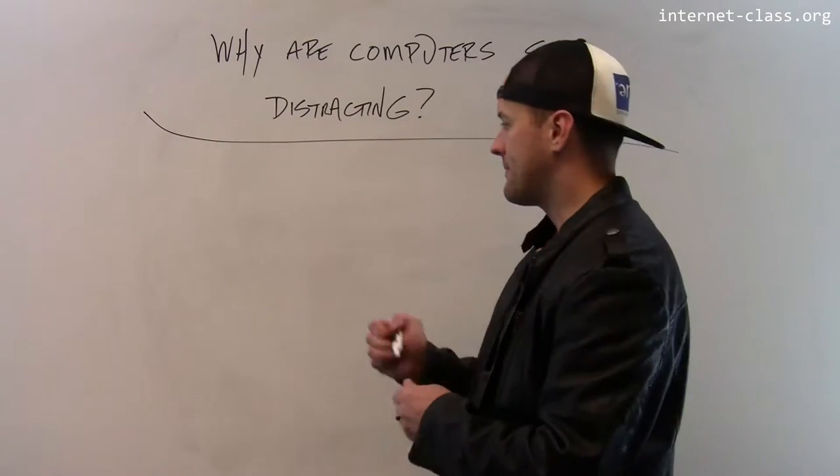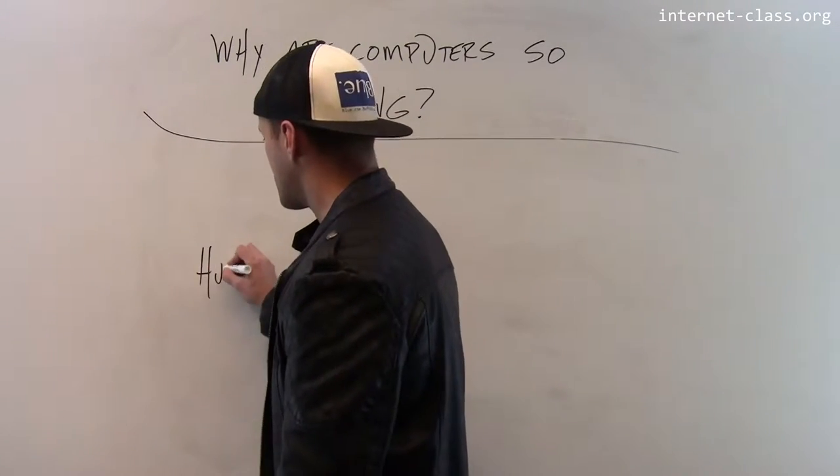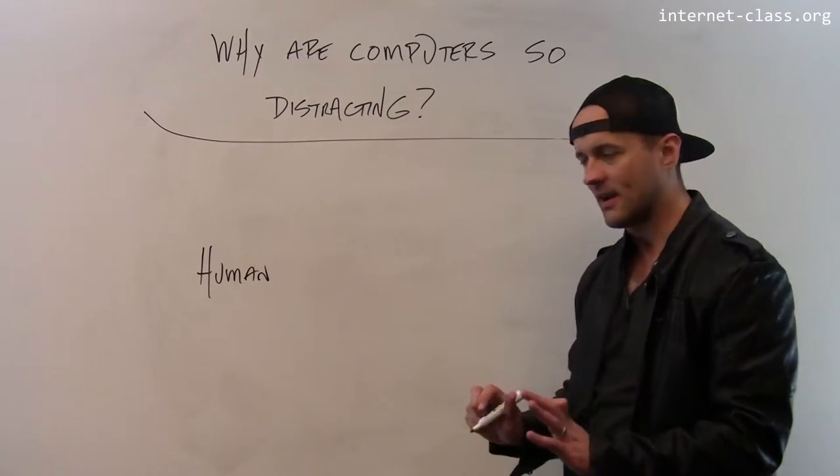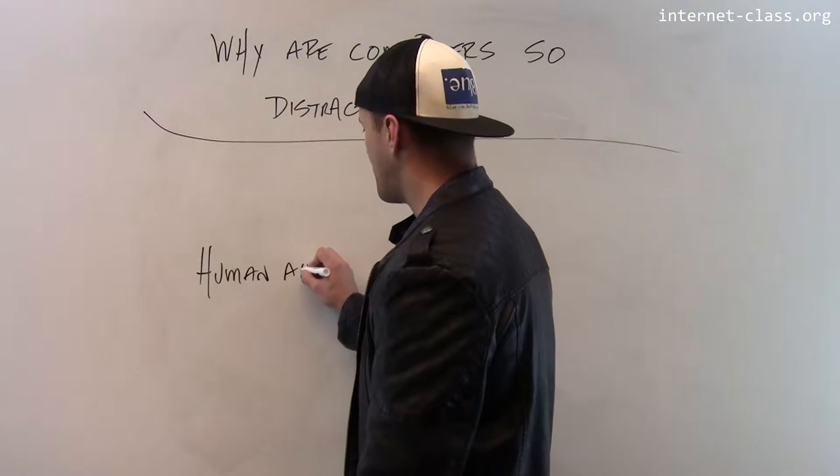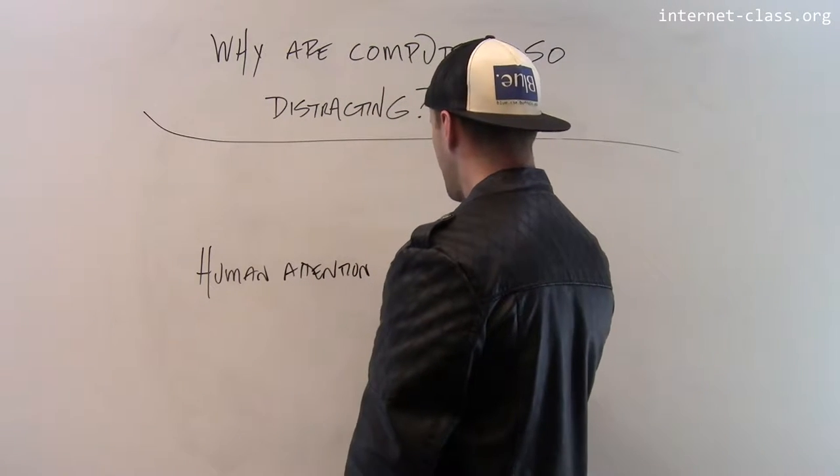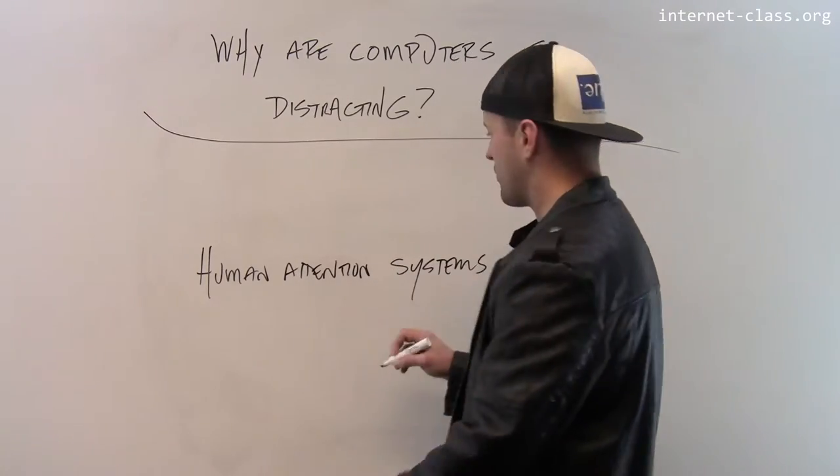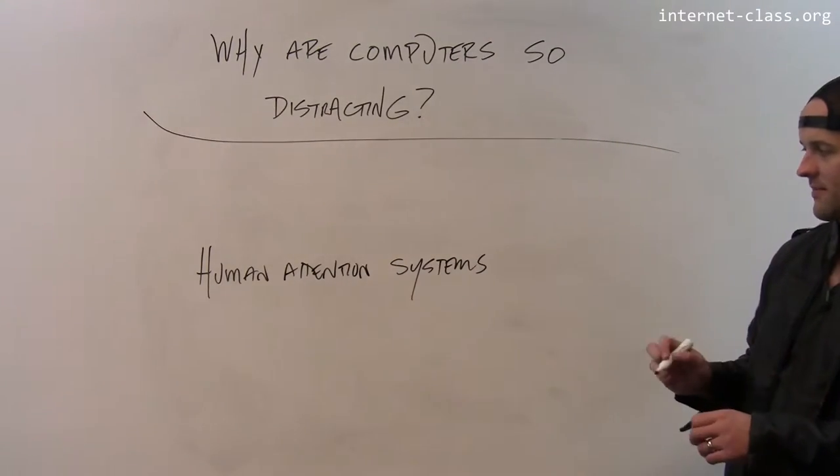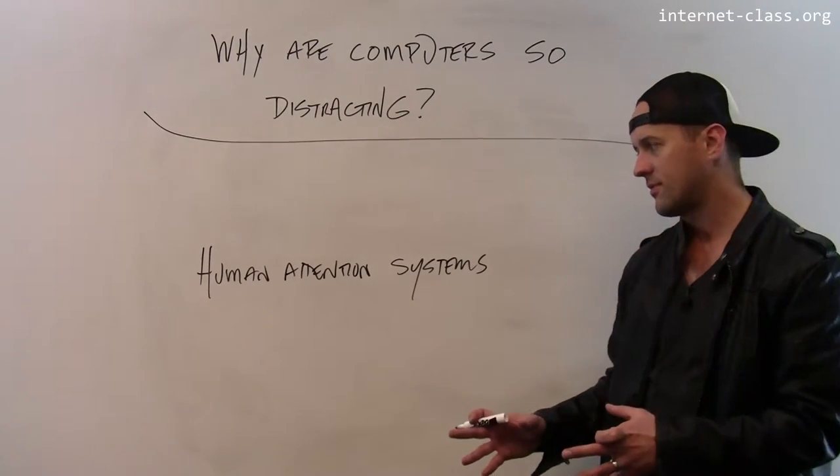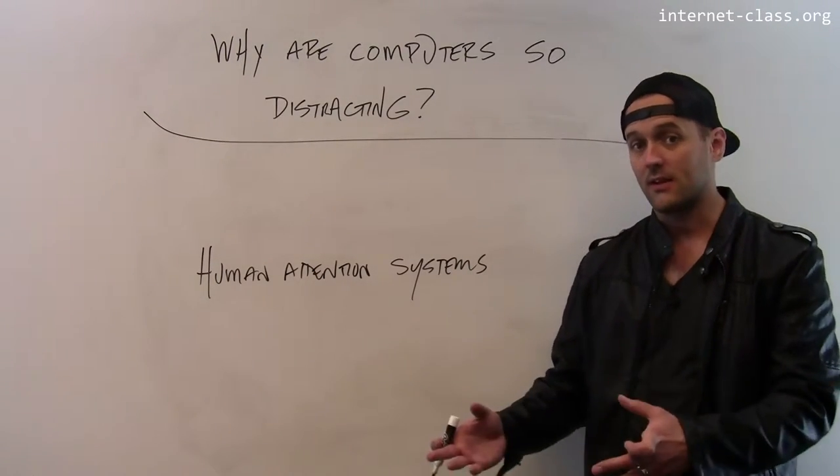Part of the problem is that computers, particularly mobile devices, are in some ways perfectly designed to hit on both of our human attention systems. Researchers that study the brain talk about the fact that humans really have two different attention systems, two different systems for reacting to things in the world.